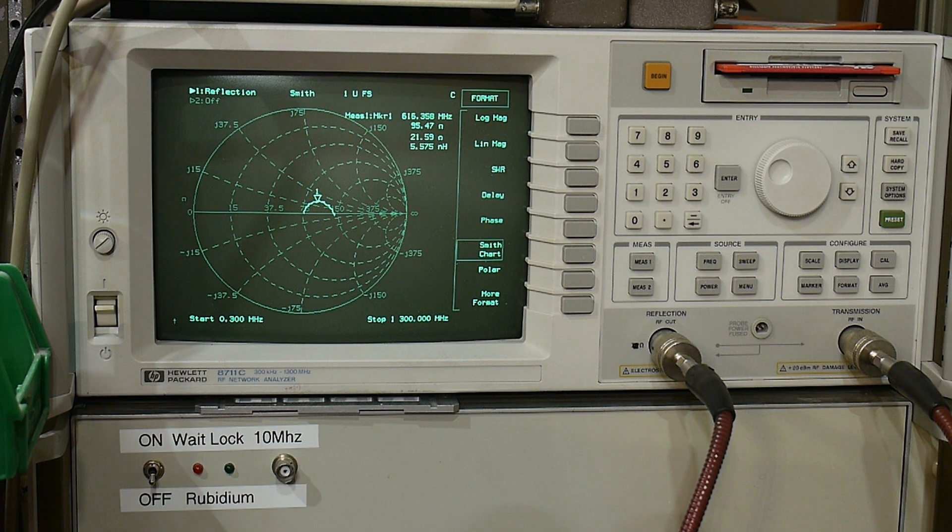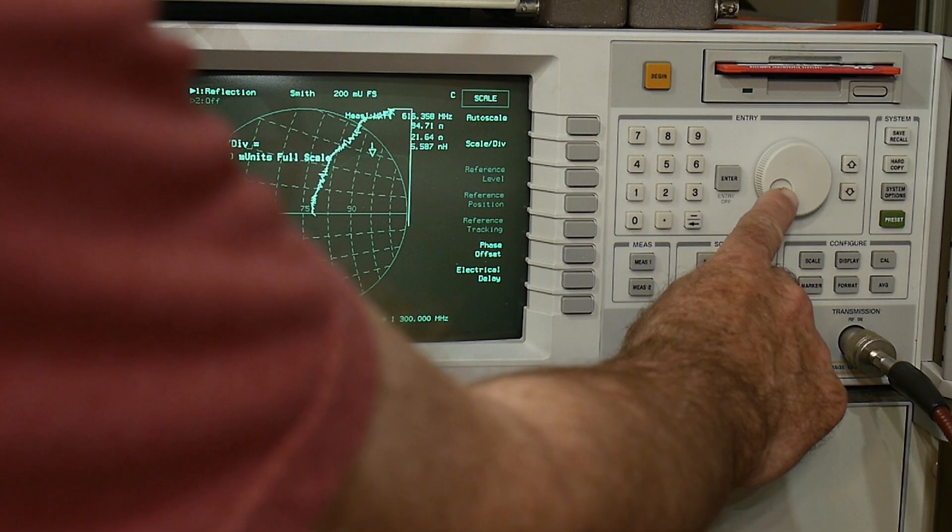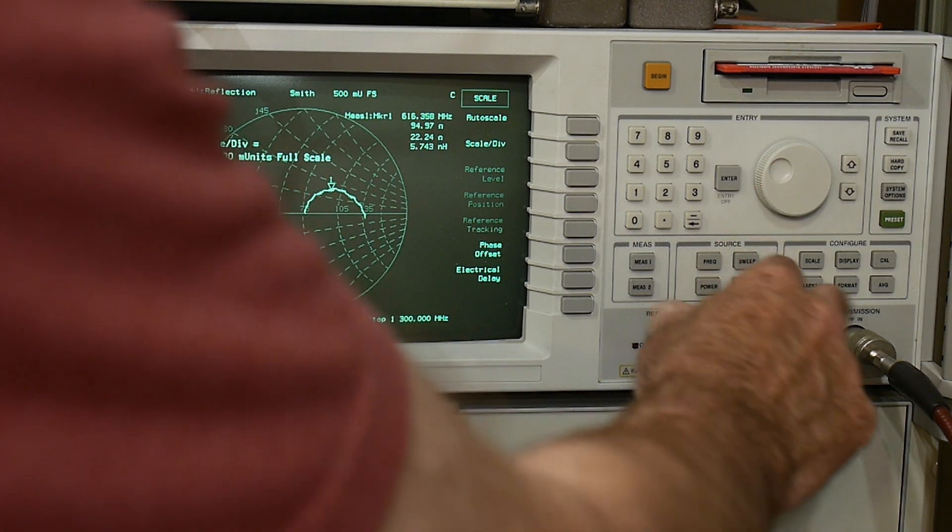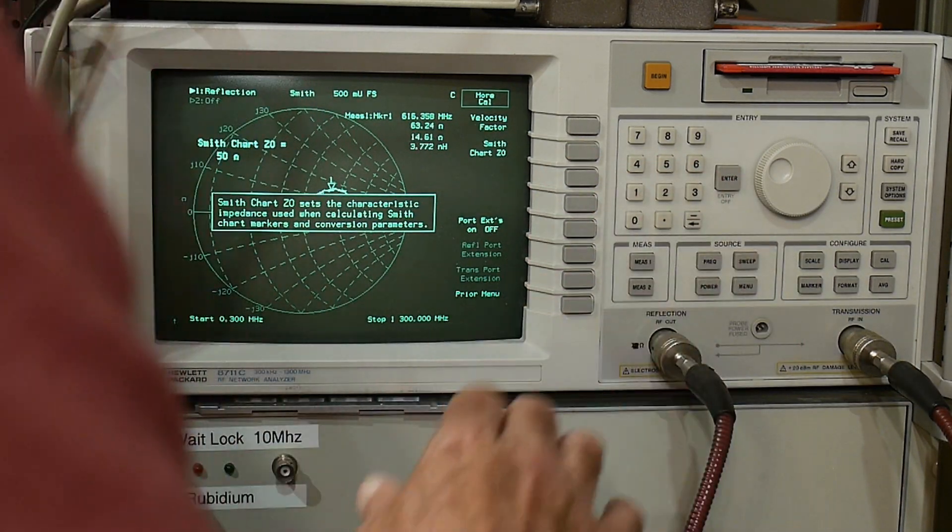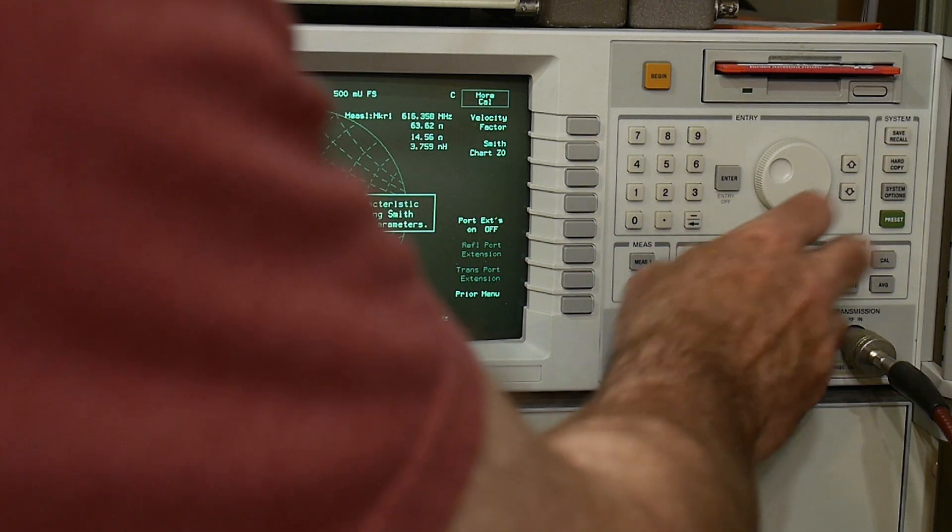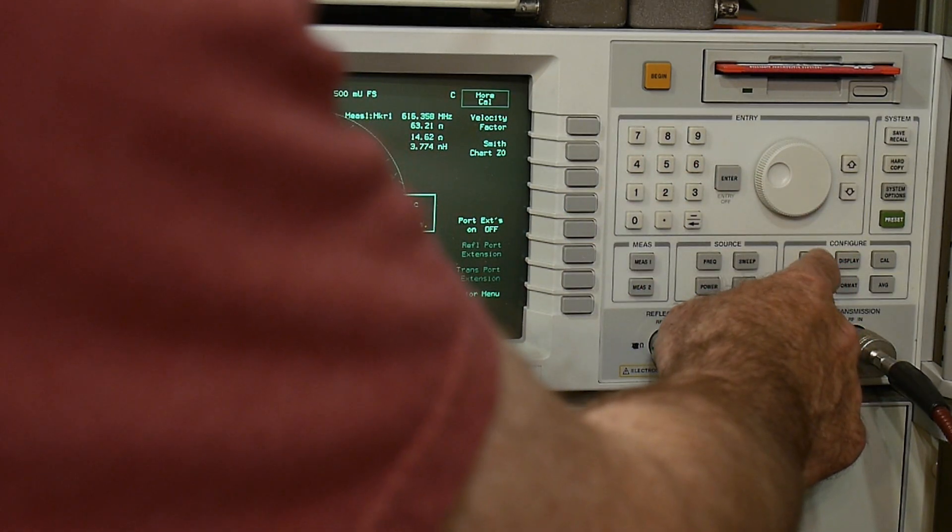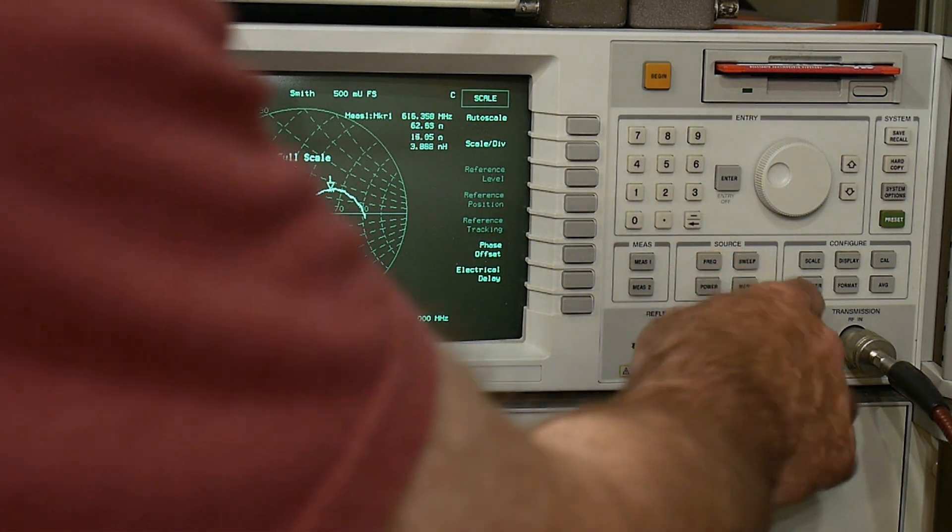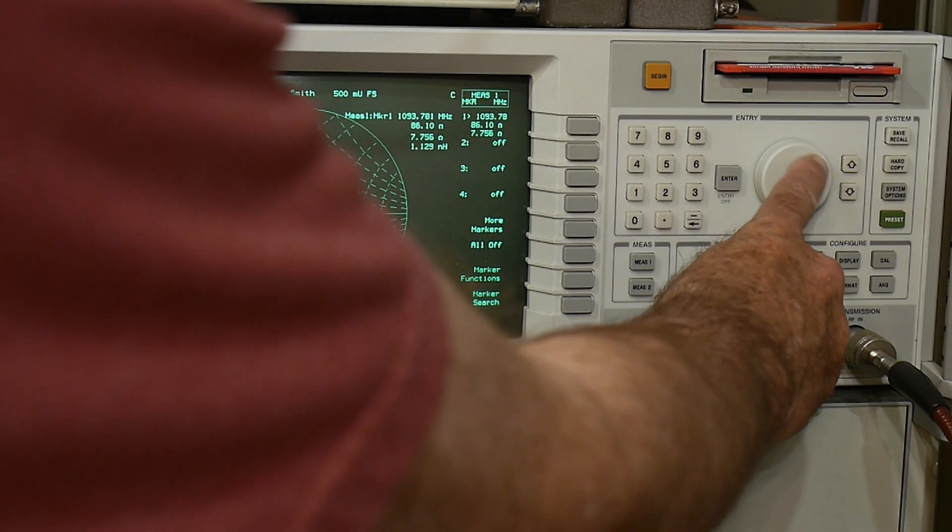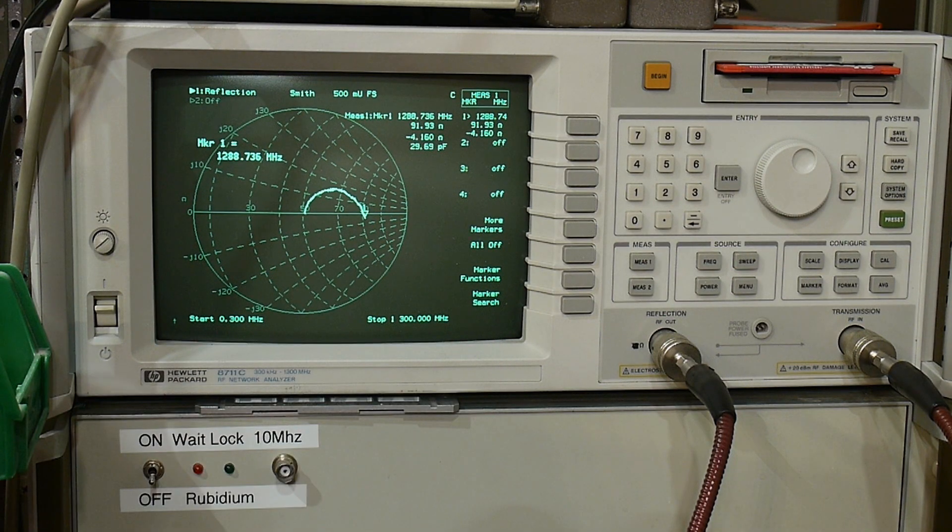Let me change the scale factor to 50 on the Smith chart. Oh my goodness, 70 ohms. This is bad. It's going all the way to 92 ohms over here. That's not good at all - that is not a transmission line.